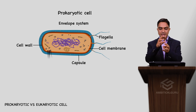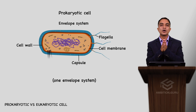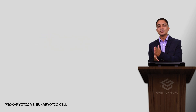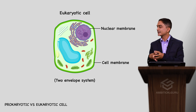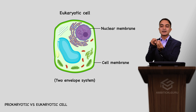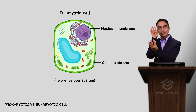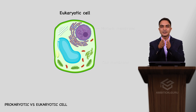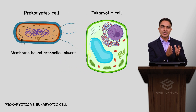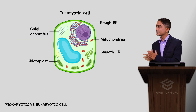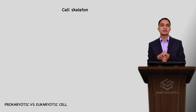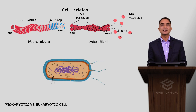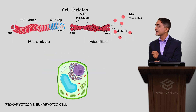Regarding the cell envelope system: prokaryotic cells have a one-envelope organization in their cell membrane, while eukaryotic cells have a two-envelope system. Similarly, membrane-bound organelles are absent in prokaryotes but present in eukaryotes. Regarding the cytoskeleton: microtubules and microfibrils are absent (or rarely present) in prokaryotes but present in eukaryotes.